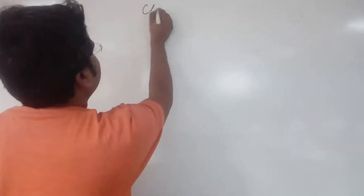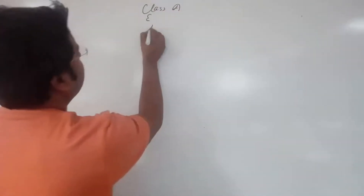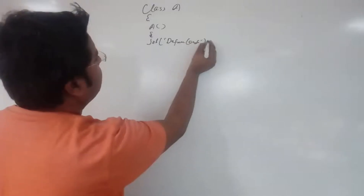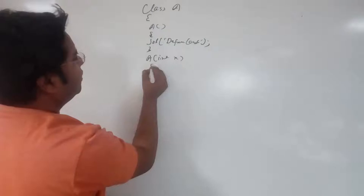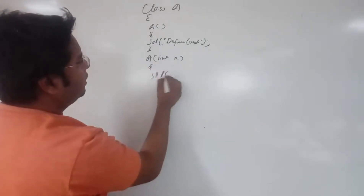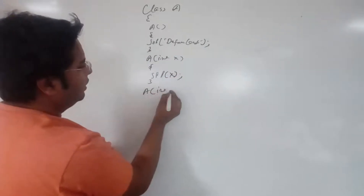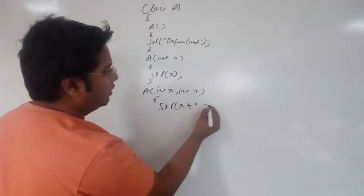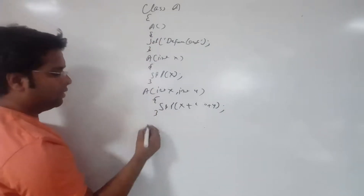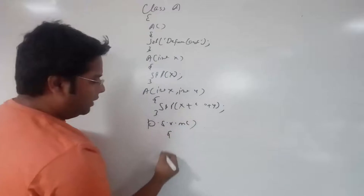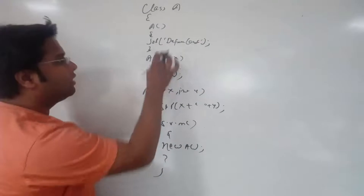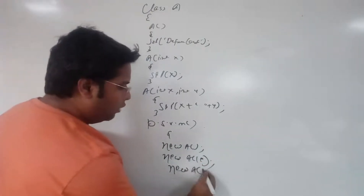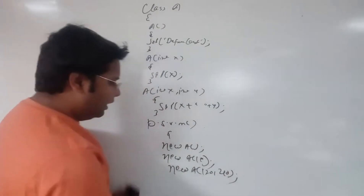We have a class with a default constructor, a message default constructor, and a parameterized constructor. We also have a parameterized constructor with int x and int y. This is our main method where we set up the class.